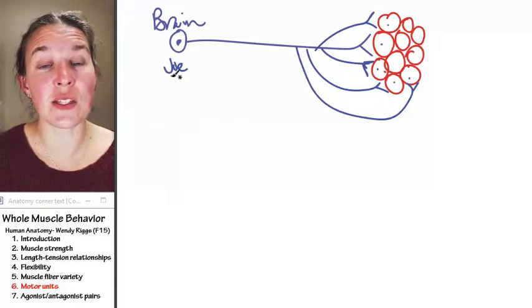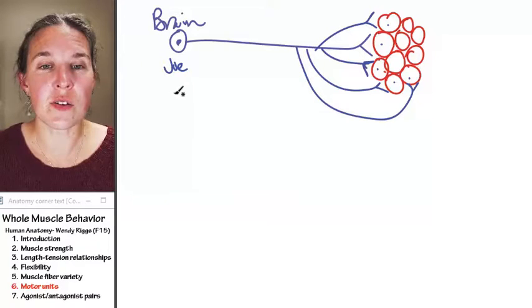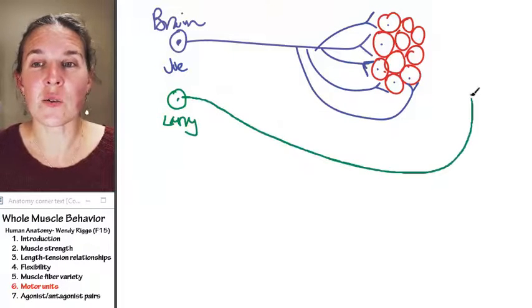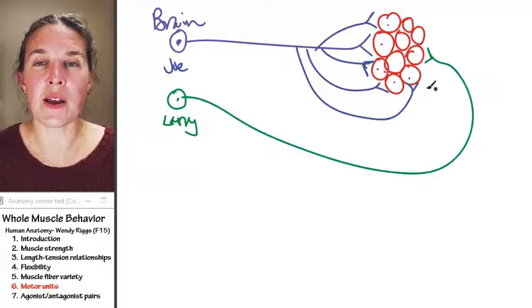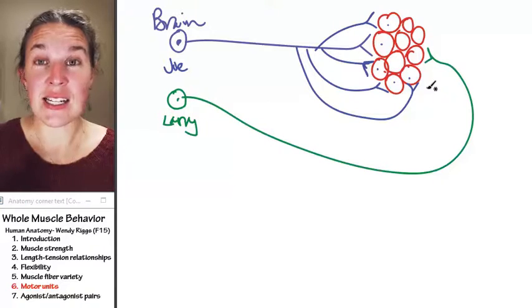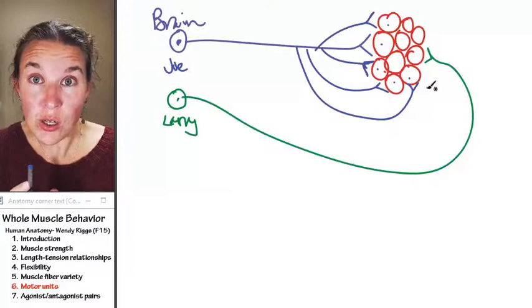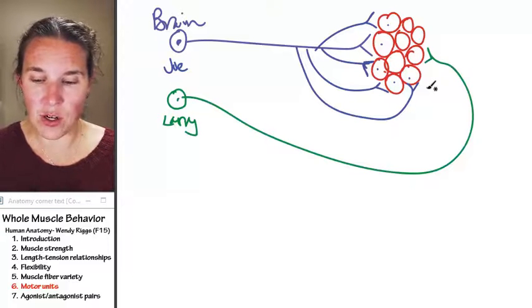The brain also knows that if we activate Larry, Larry only innervates one myofiber. So Larry is going to send, if Larry gets activated, we're just sending a message to one. We're going to get a finer message.